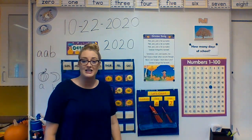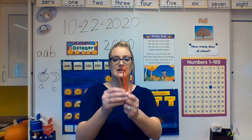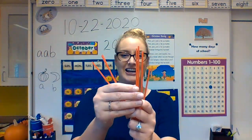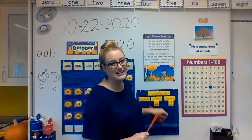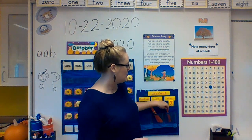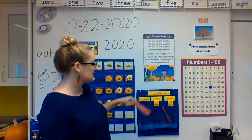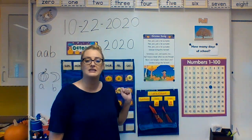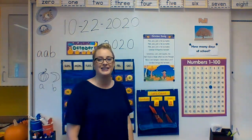Yesterday, we had 47 days. What's 47 and one more? Let's look at the 7. Help me count these 7: 1, 2, 3, 4, 5, 6, 7. And one more makes 8. So 47 and one more makes 48. Help me count by 10s: 10, 20, 30, 40. 4 tens and 8 ones makes 48. Can you say that with me? 4 tens and 8 ones makes 48. Good job.